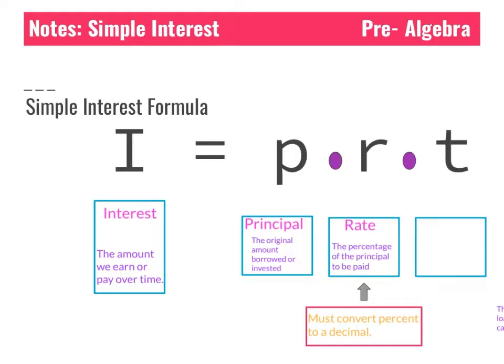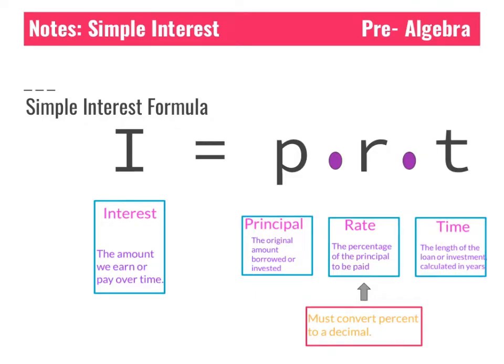Finally, our last variable is T, which stands for time — the length of the loan or investment calculated in years. It's very important that if we get any problems listed in months, we convert them to years first before completing our problem.